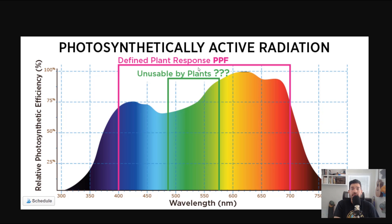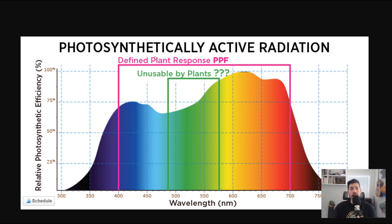You don't want to be shining wavelengths of light on a plant that they're not going to use. Within this, you can start to customize your spectrum, which gets really in-depth. But to get this out of the way: photosynthetically active radiation refers to the range of light that plants are using for photosynthesis.